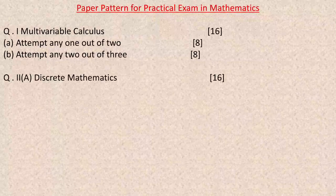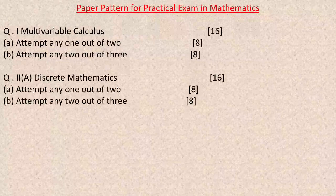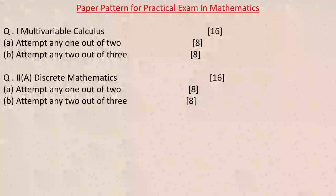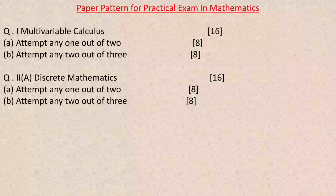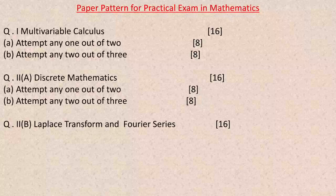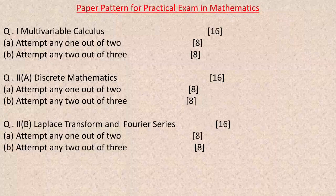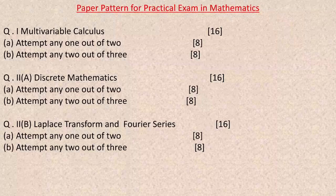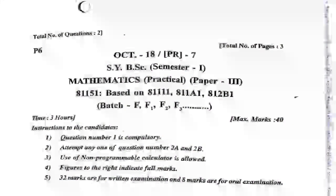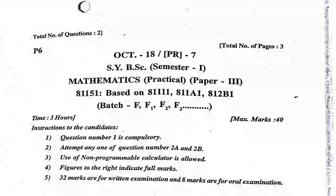Question 2A is discrete mathematics for 16 marks, again the same pattern: any one out of two and attempt any two out of three. Question 2B is Laplace transform and Fourier series for 16 marks, with Part A being attempt any one out of two and Part B attempt any two out of three for 8 marks each. Students have question 1 compulsory, and from 2A and 2B must solve any one. This is the first page of the question paper of October 2018.